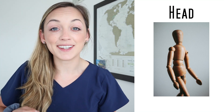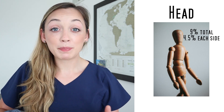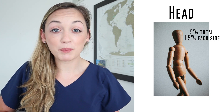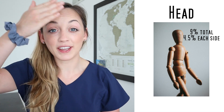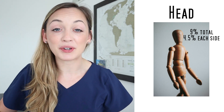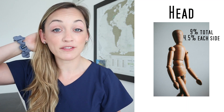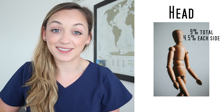We will start with the head. The head has a total of 9% body surface area for the rule of nines, but you have to remember that is split in two. You have a front and a back of your head, so 4.5% is the front and 4.5% is the back. I did forget to mention: the rule of nines is for adult patients only — this is not for your pediatric patients.